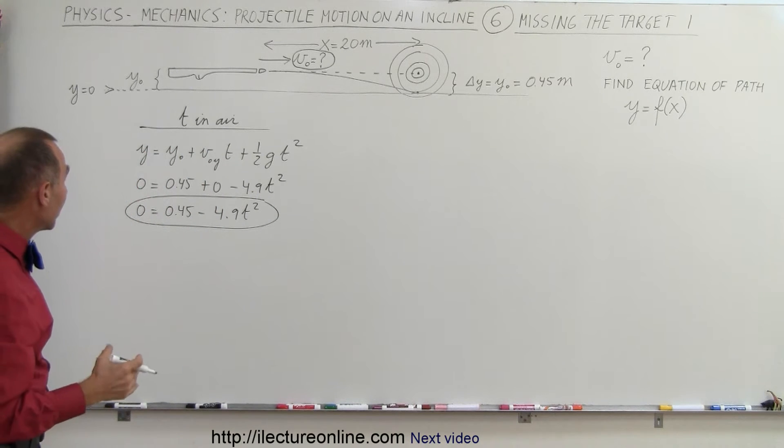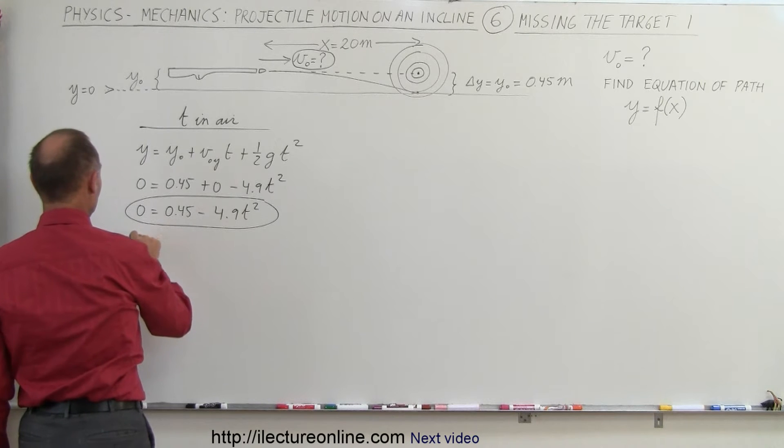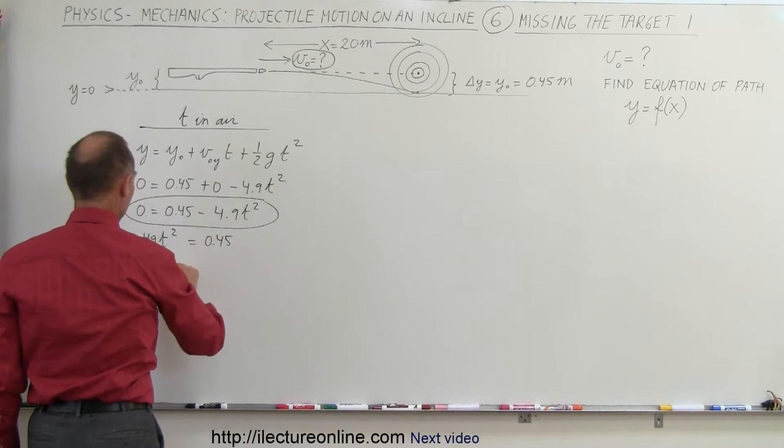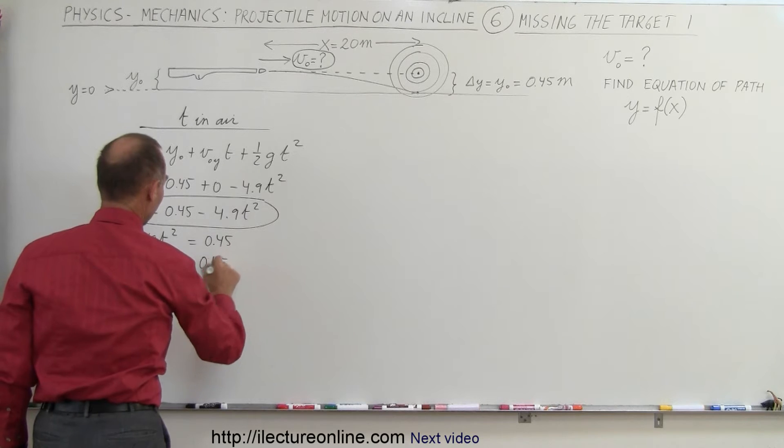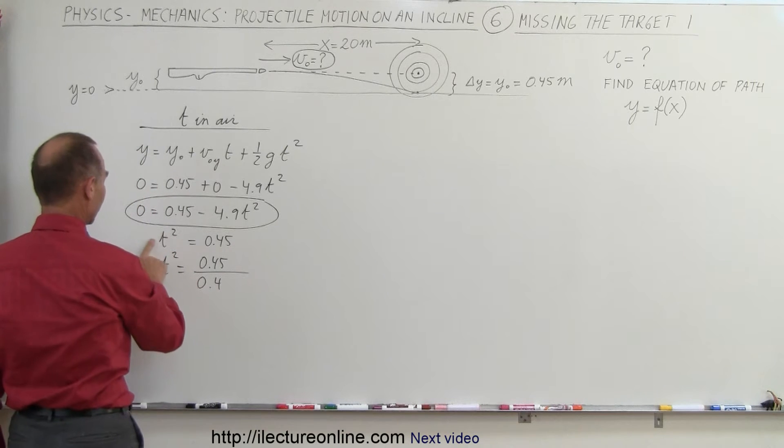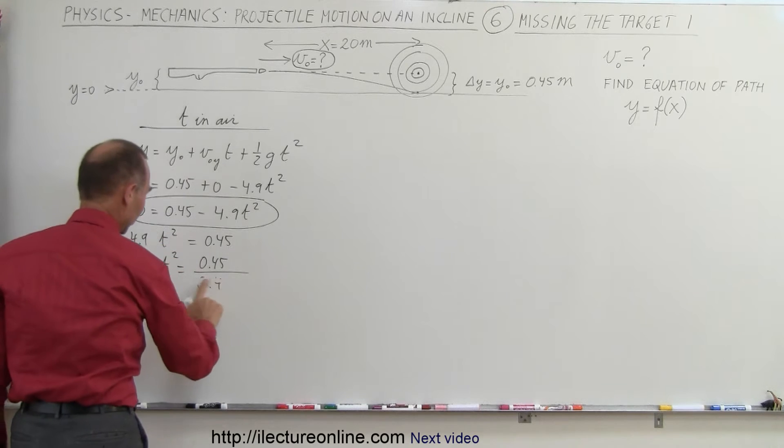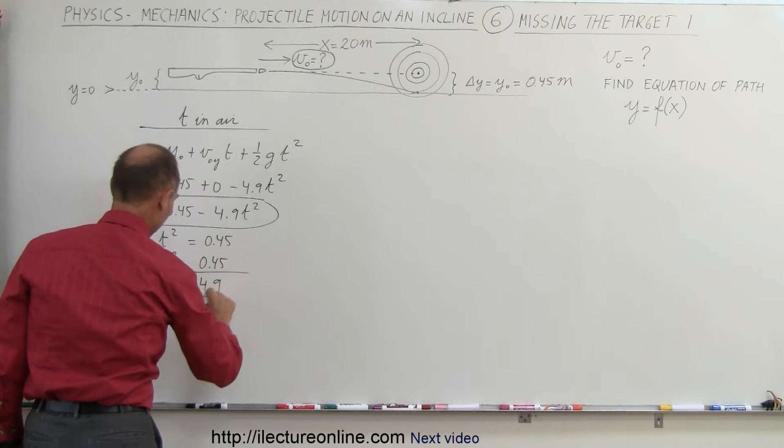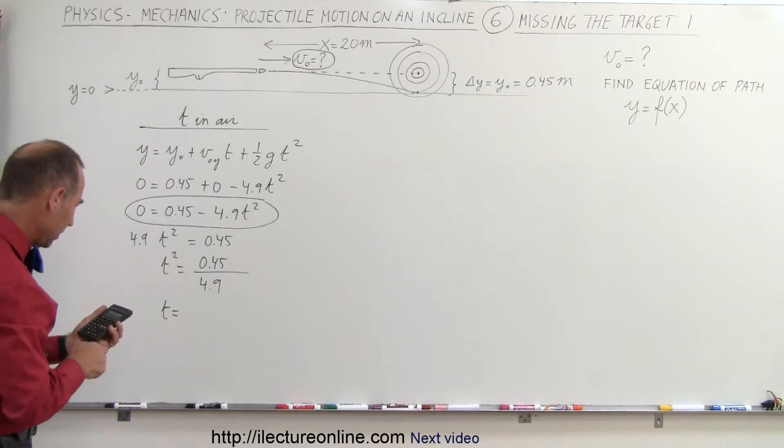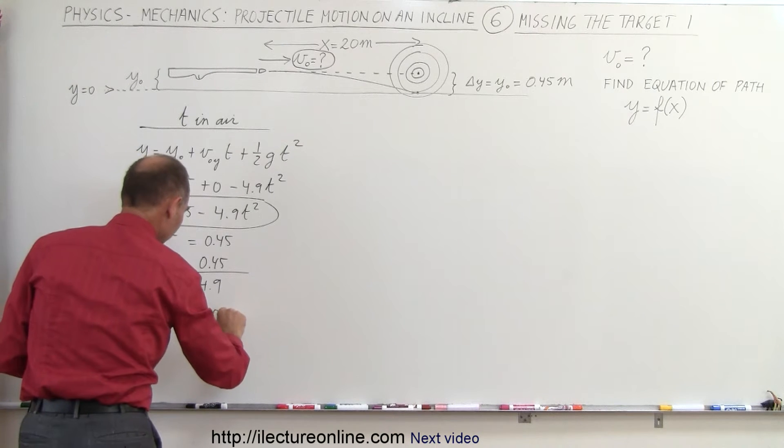And that allows us to find time because there's only one unknown in here. Let's solve for time. What we can then do is we say 4.9 t squared is equal to 0.45. So t squared equals 0.45 divided by 4.9. And t equals, all right, 0.45 divided by 4.9, take the square root of that, and we end up with time equals 0.303 seconds. So just about one-third of a second to hit the target.